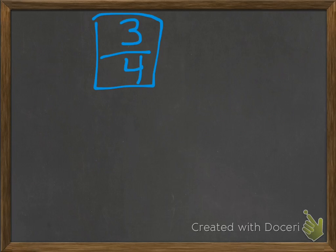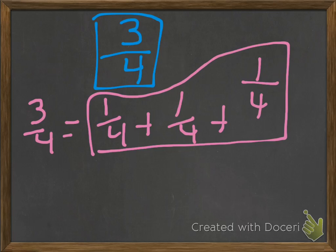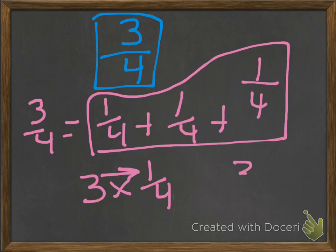Let's take a look at 3/4. There are a couple of ways we can go about showing this. The first way is what we've seen before: 3/4 is the same as 1/4 plus 1/4 plus 1/4. We could also show it through multiplication — since we know there are three 1/4s, we can write 3 times 1/4. Multiplying straight across, we still get 3/4; the denominator stays the same.